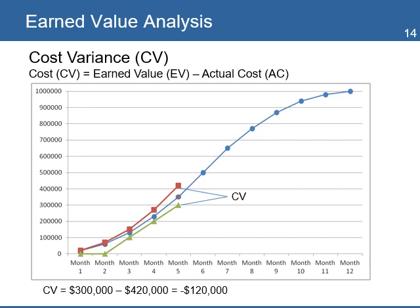You calculate cost variance to see if the project is spending funds as planned or not. Cost variance is the difference between Earned Value and the actual cost. For this example, the value of cost variance is minus $120,000. A negative result indicates a budget overrun — in other words, the project has spent more money than the value of the work delivered to date.